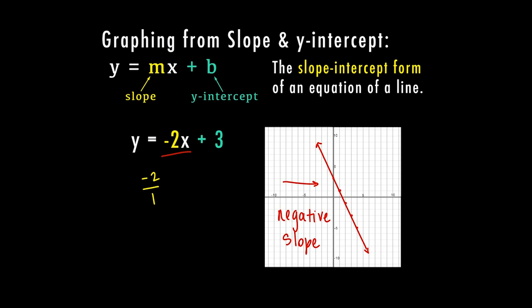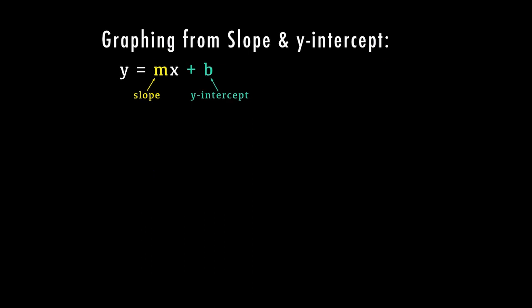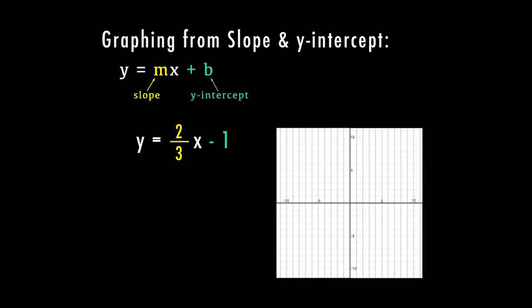So make sure if your slope is negative, your line is going in the downward or falling direction. Let's do another example. Here we have y equals mx plus b, and my equation is y equals 2/3x minus 1.